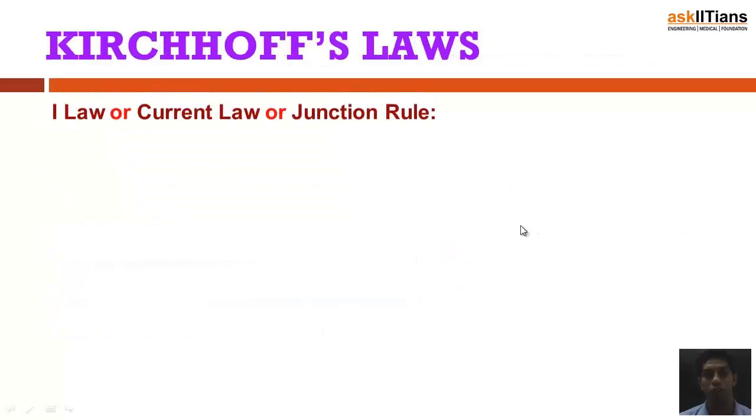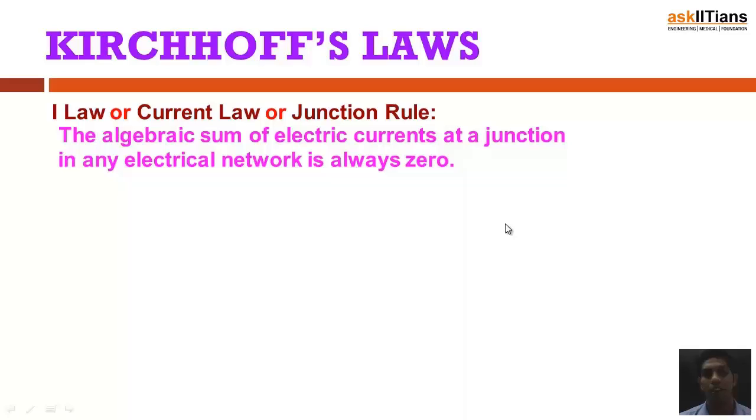Kirchhoff's law: The first Kirchhoff's law, that is the junction law, states the algebraic sum of electric currents at a junction in any electrical network is always zero. To better understand this, let's have a proper diagram.